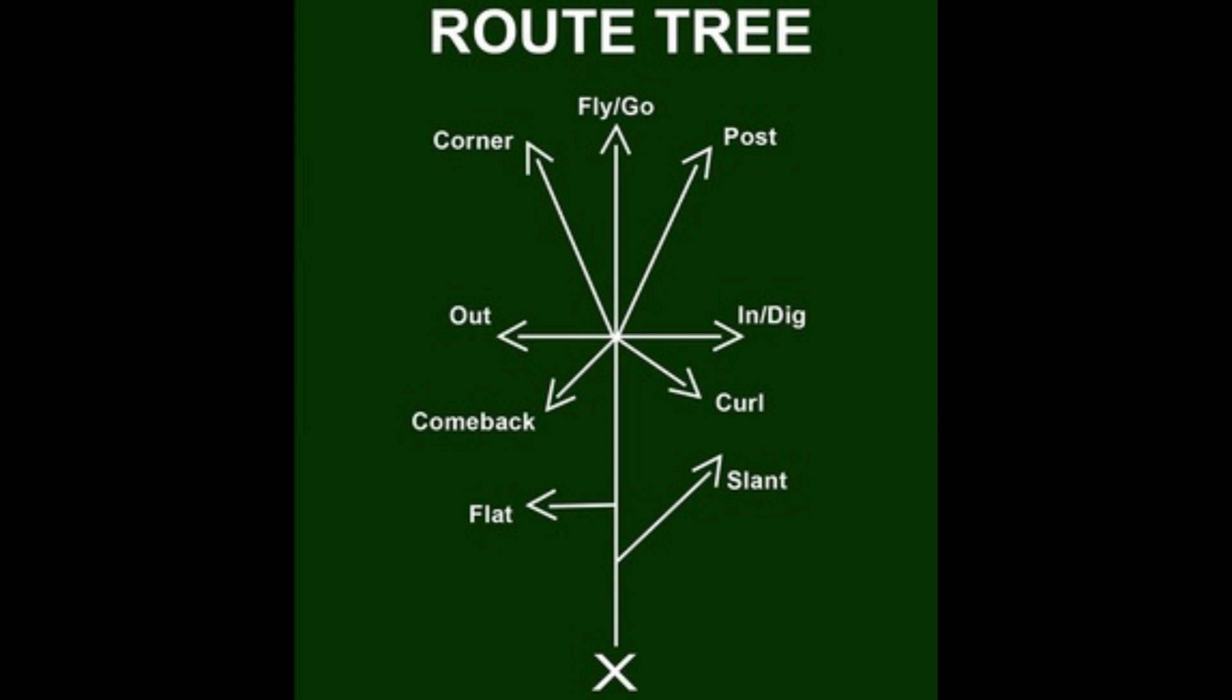So when you talk about a post route, that is the marker that they're using. You're going to go up the stem and then when you make your cut, you're going to break toward the post. And now though, the posts are not in the end zone, of course, for safety reasons. And then the fly or the go route, you're going straight up the field. It's a speed-based route.